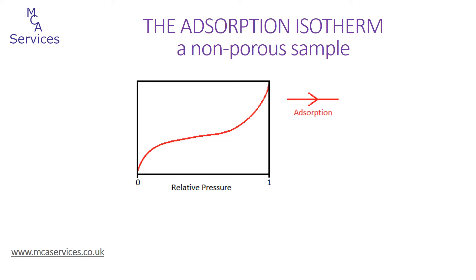Previously we showed adsorption isotherms but it's worth a very quick recap. This is a theoretical adsorption isotherm — adsorption to a non-porous sample material, and this would apply to a range of adsorbates at cryogenic temperature, for example nitrogen. As we move from low to high relative pressures we can see three separate regions to the isotherm. At low relative pressures the isotherm curvature is due to preferential adsorption to the more attractive surface sites, followed by progressively less favoured sites — energetically favoured for physical adsorption to occur. This region is used for the calculation of specific surface area, for example by BET analysis.